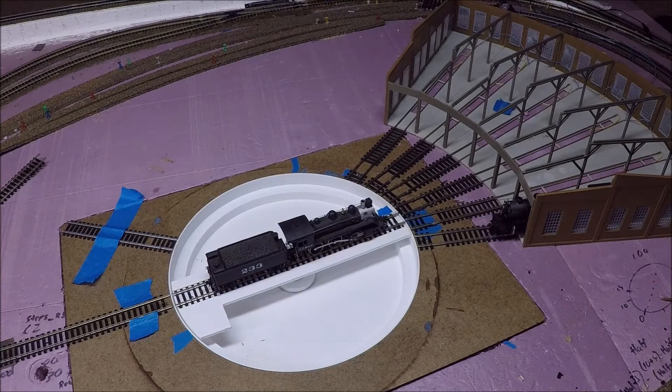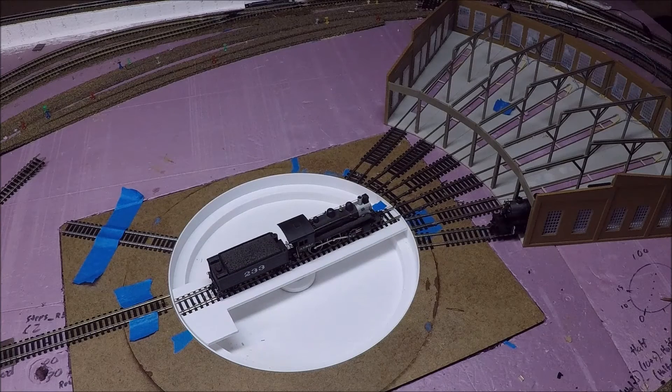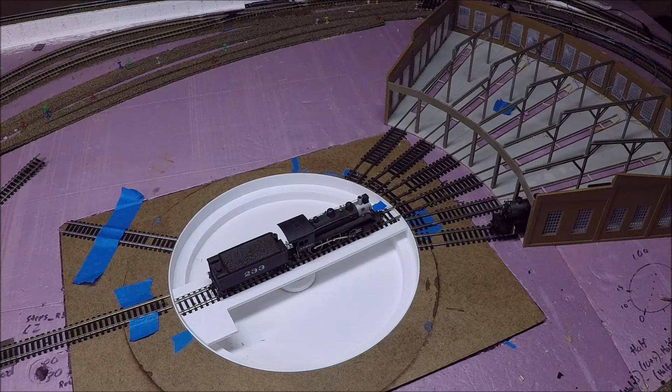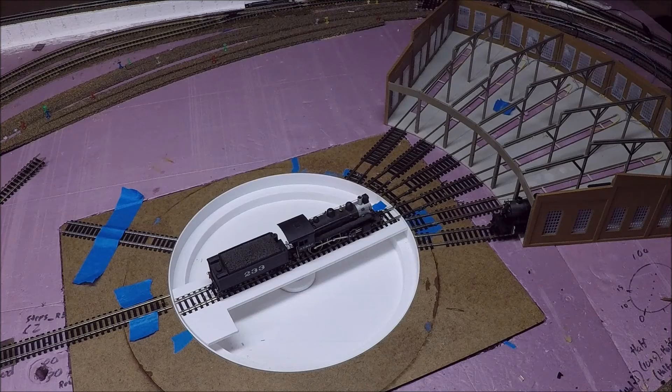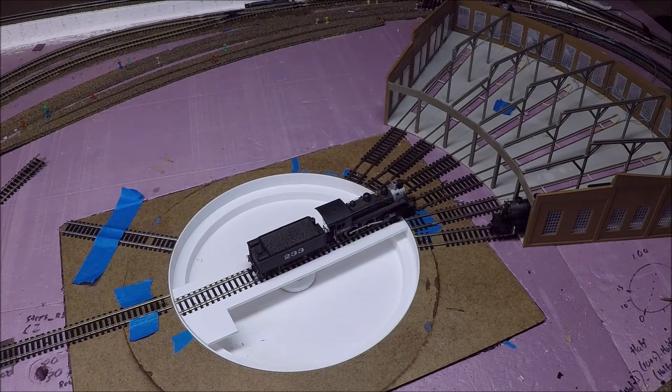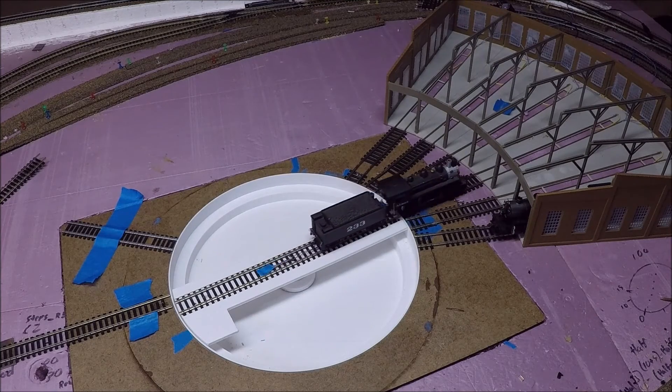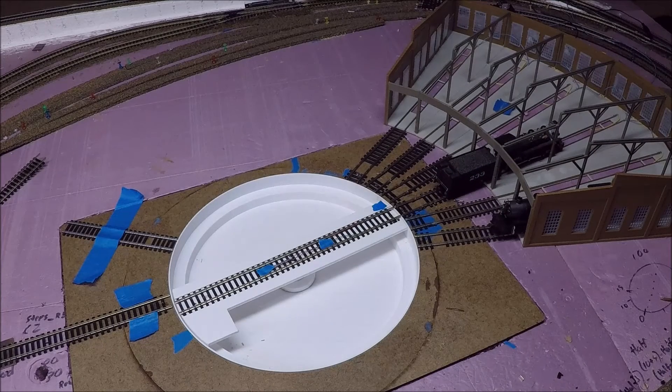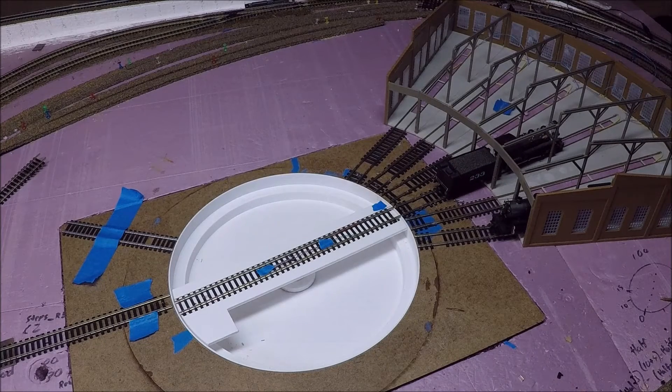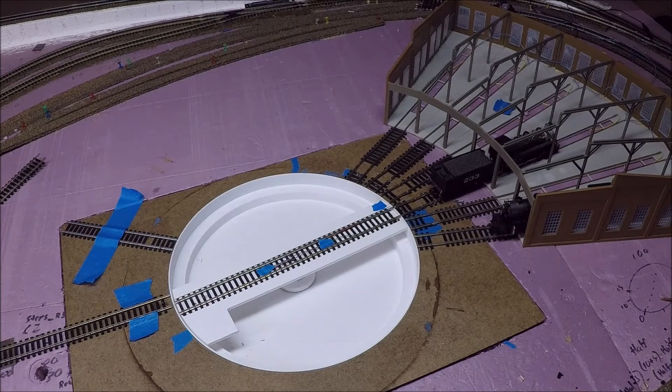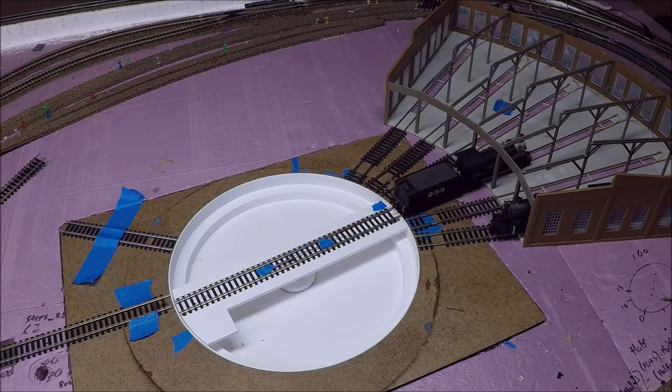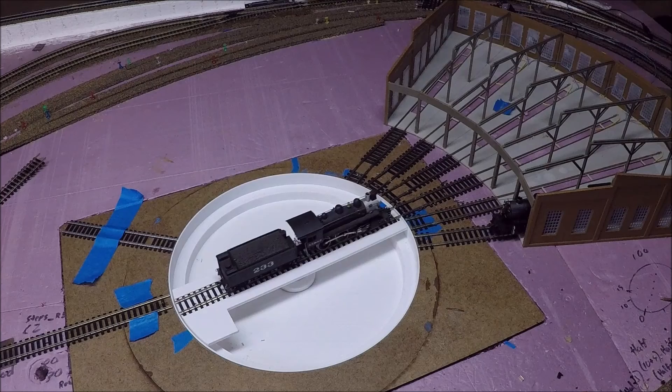Now, hold on. I don't know if you heard it, but there's a little click. That's the auto reverser flipping. So what that does is now the polarity of the track is lined up with the stall. So you don't have a short circuit when you bring the train in and out. Perfect.